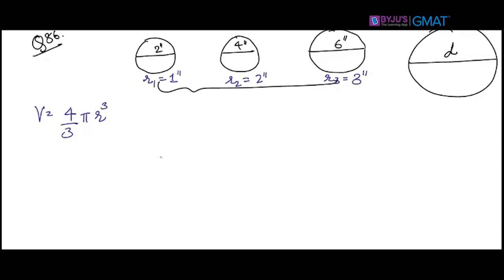Since the volume will be same, let's say the radius of this bigger cheese ball will be capital R. So 4/3 π r1³ plus 4/3 π r2³ plus 4/3 π r3³ will be equal to 4/3 π R³.